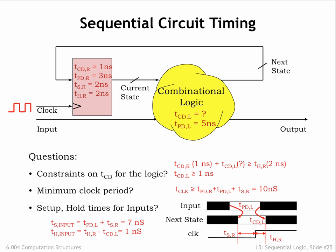If input is stable at least 1 nanosecond after the rising clock edge, the next state will be stable for another 1 nanosecond—in other words, a total of 2 nanoseconds after the rising clock edge. This meets the specified hold time of the register.